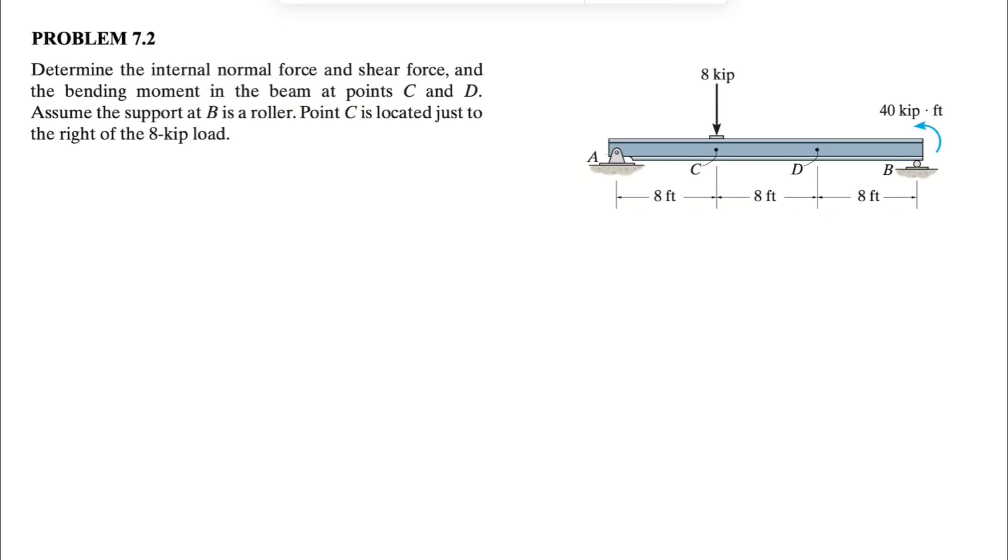We have two different supports here. As always, we're going to start with the free body diagram of the whole system. We have a pin at point A, which means we have both x and y components, Ax and Ay. At B, we only have one component in y direction since it's a roller, it can freely move in x direction.